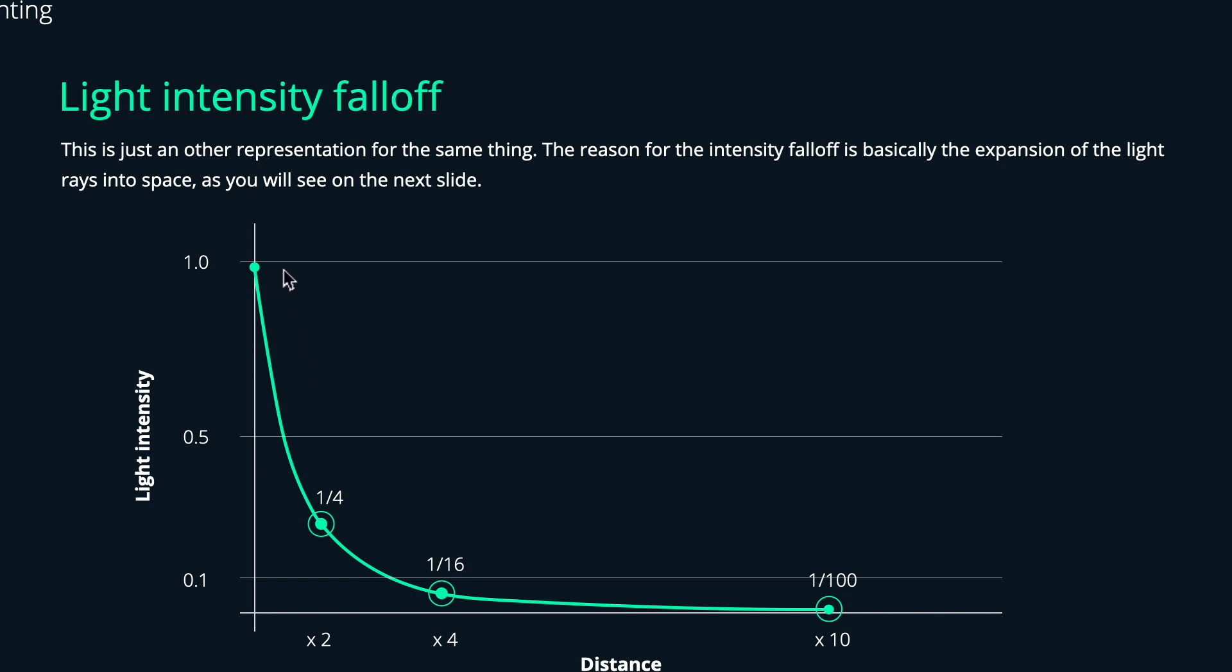This is just another representation of the same thing. If we have a given light intensity of like 100% and then we double the distance from an object to that light source, you can see with every doubling of the distance the intensity will be decreased by like four times.